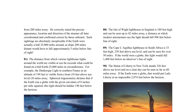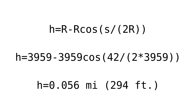The Isle of Wight lighthouse in England is 180 feet high, and can be seen from up to 42 miles away. I like how this says modern astronomers claim the light should fall 996 feet below line of sight. First of all, do you know what astronomers are? And second of all, that's way too low. At a distance of 42 miles on Earth, we would expect 294 feet of curvature, which would put a 180-foot-high lighthouse below the horizon.